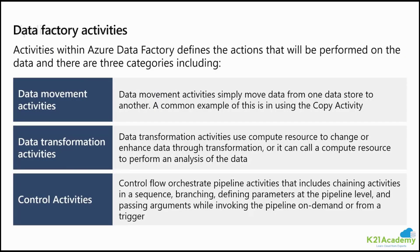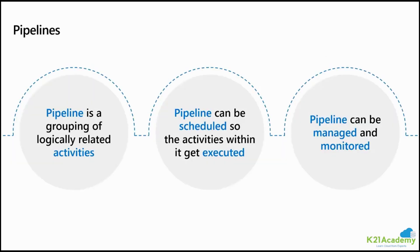Data factory activities can be of multiple types. We have data movement activity like copy activity which moves data from one location to another. We also have data transformation activities, which use compute resources to change or enhance data through transformation, or call a compute resource to perform an analysis. Using control activity we can control the flow of the orchestration — this includes chaining of activities, sequencing, branching, defining parameters at the pipeline level, or passing arguments while invoking the pipeline on demand or from a trigger. A pipeline is a grouping of logically related activities that can be scheduled, monitored, and managed.